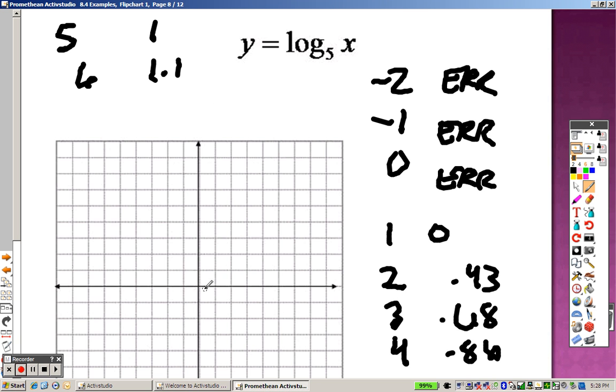So the point is, I can go over 1 and up nothing. I can go over 2 and up 0.43, over 3 and up 0.68, over 4 and up 0.86, over 5 and up 1, over 6 and up there. And the point is, it never quite touches 0 and goes past it.